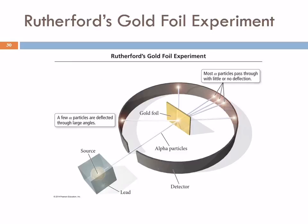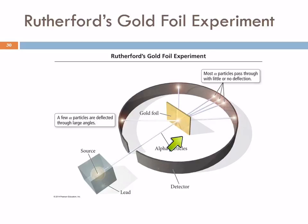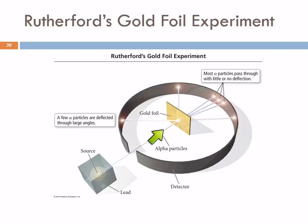The plum pudding model predicted that the particles would just go straight through the gold foil - these positively charged particles would just pass through the cakey part of the atom. Here's an illustration of the setup. Here's the source of the alpha particles shooting a beam at a very thin sheet of gold foil. They expected the particles to go straight through, and a lot of them did. But some of them bounced back. This circular thing is a detector that allows them to see where those particles were going.